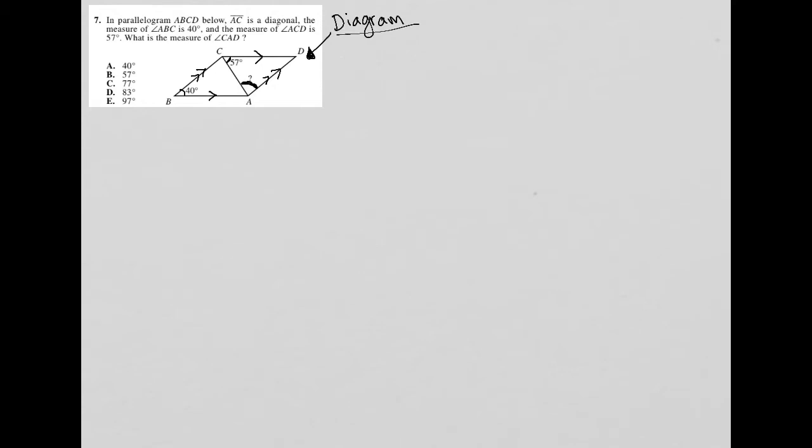So let's think about parallelograms. A parallelogram has opposite sides that are parallel. But on this test, anytime I see two lines that are parallel, I should think about my parallel line and transversal angle relationships, like alternate interior, same side interior.